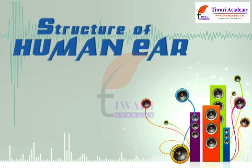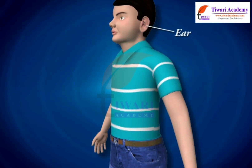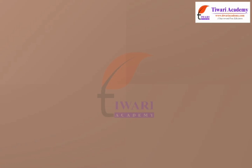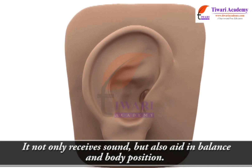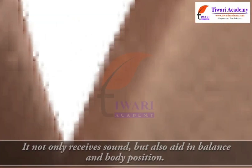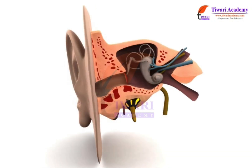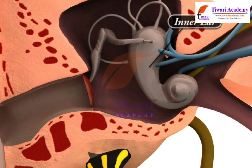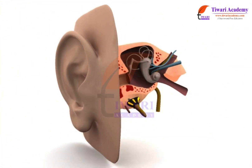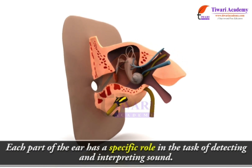The human ear is the organ that detects sound. It not only receives sound but also aids in balance and body position. The ear is part of the auditory system and consists of three basic parts: the outer ear, the middle ear, and the inner ear. Each part has a specific role in detecting and interpreting sound.